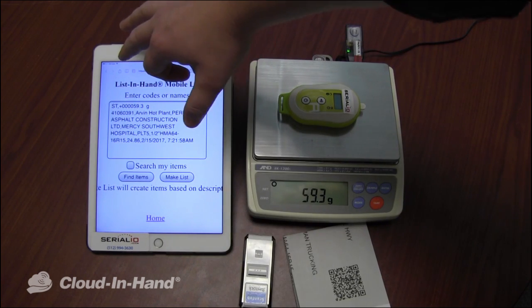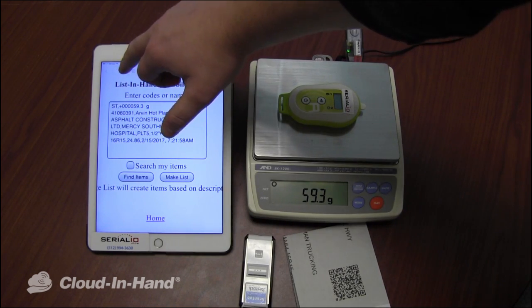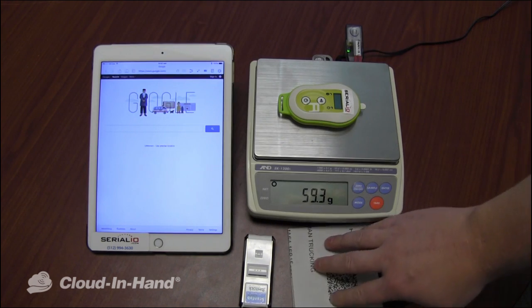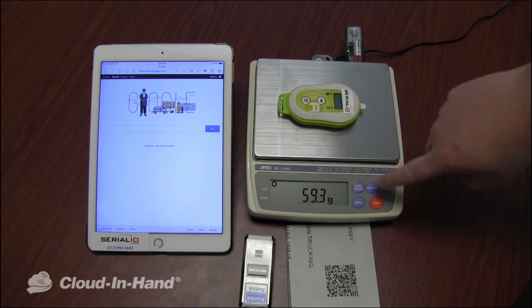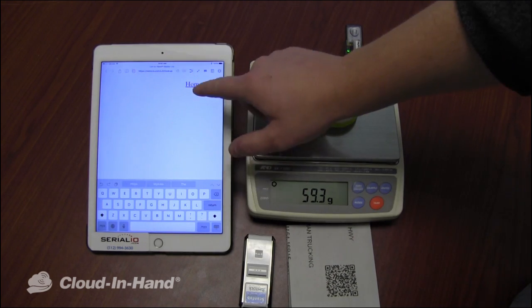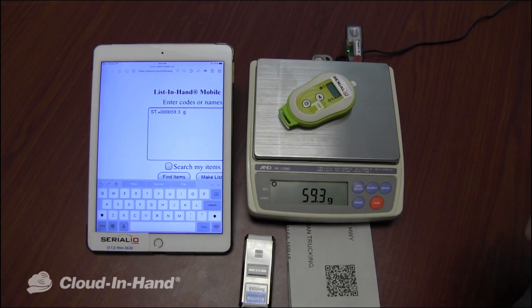This also works if I'm on a different web page. So here we'll navigate to Google, which is not the web application that I want to send data to, but when I send data from the scale to iScan browser, it automatically navigates back to my web application and inputs the data into the correct field.